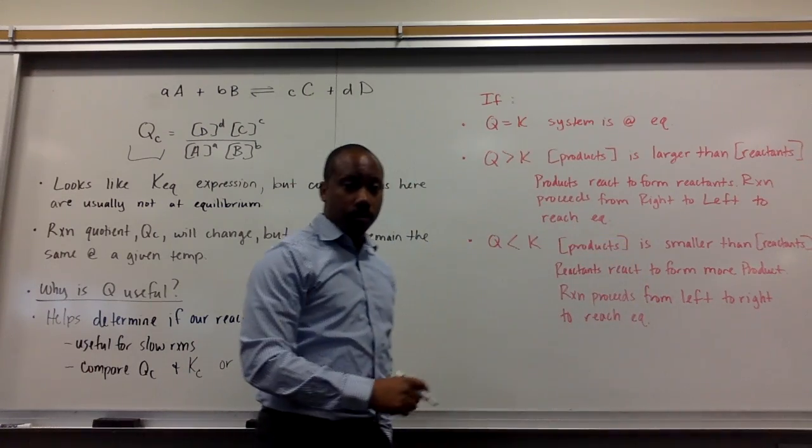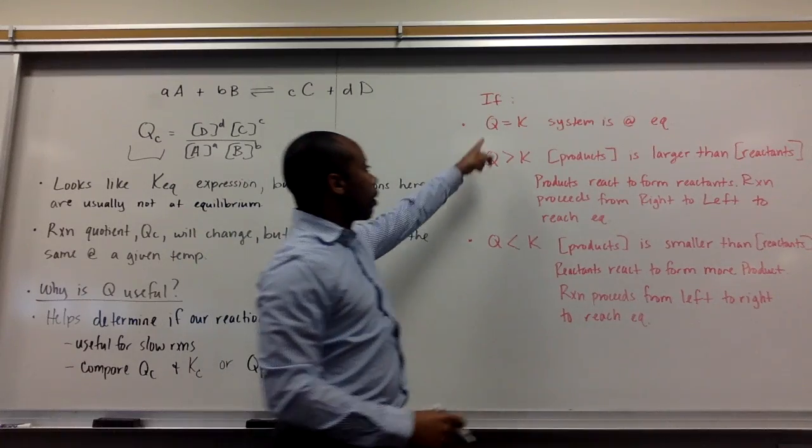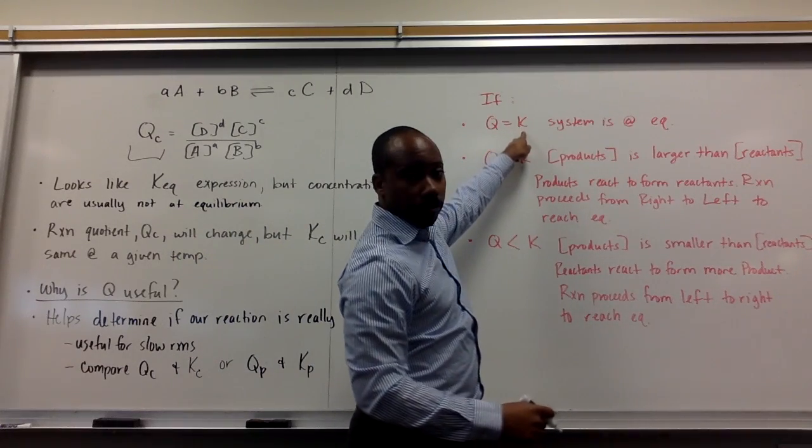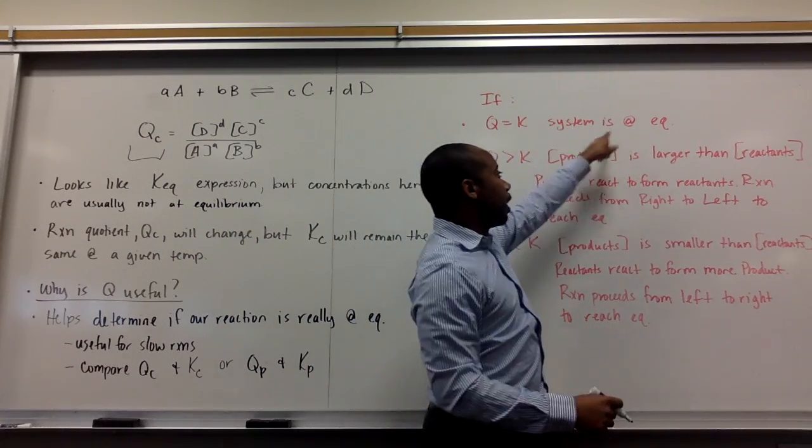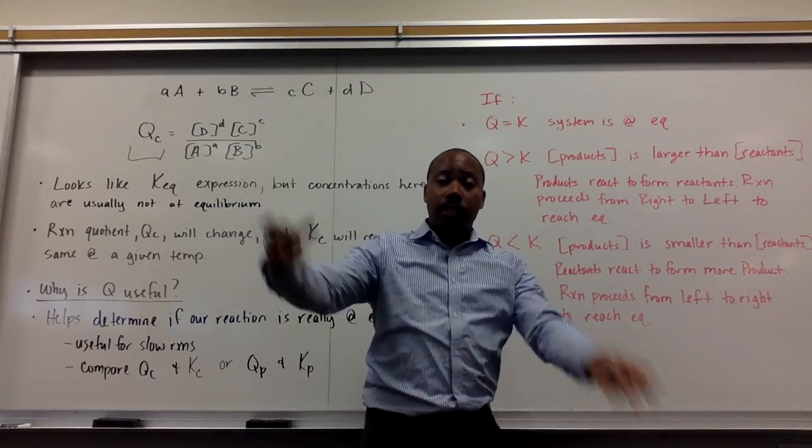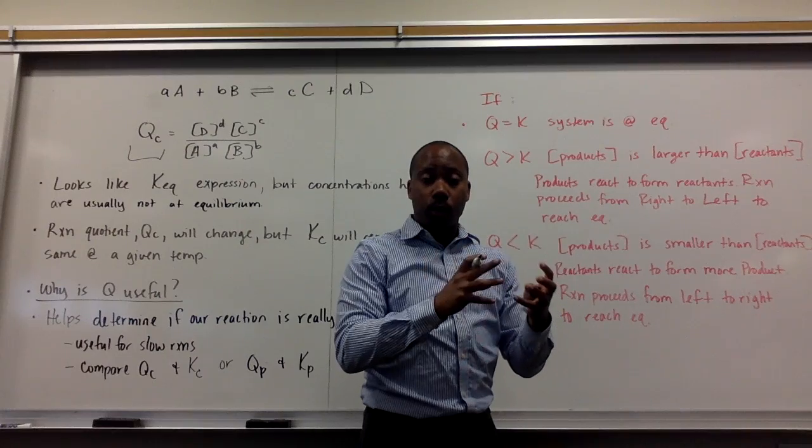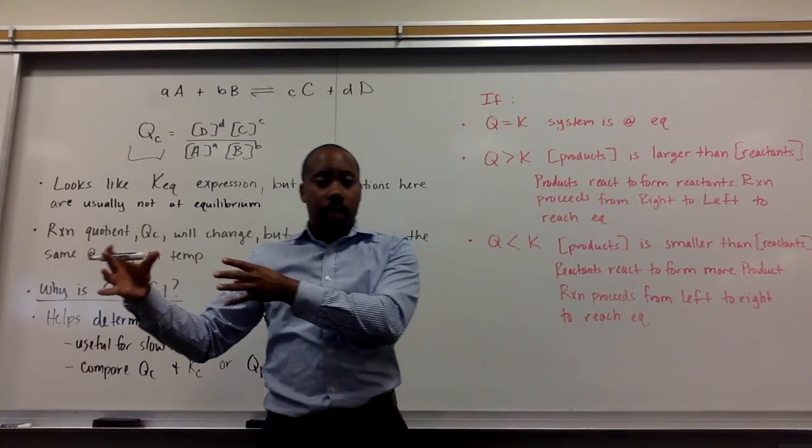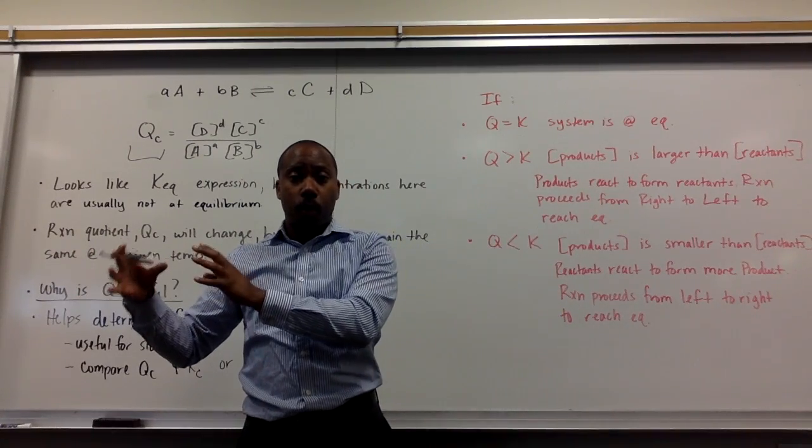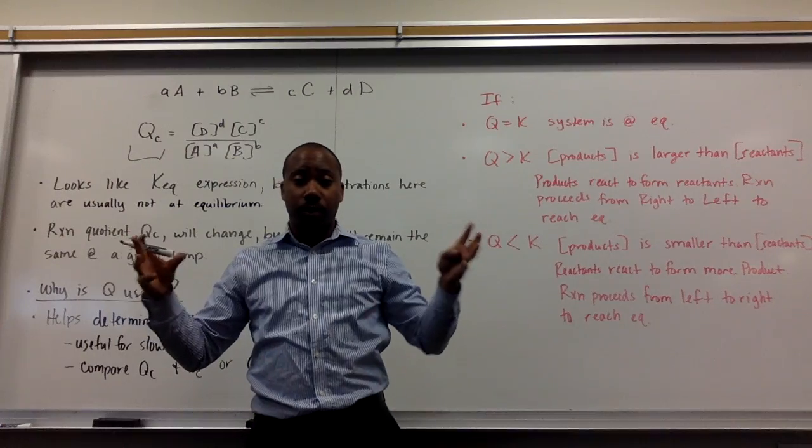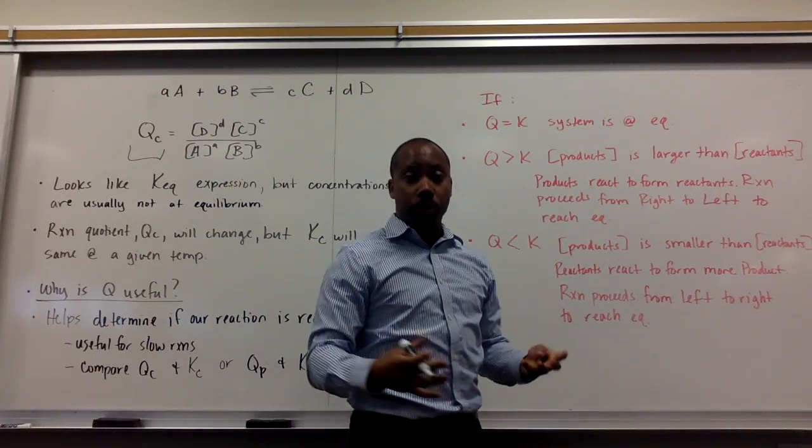Here's a takeaway from this lesson. If Q is equal to K, that means our system is at equilibrium. So, if I had plugged in those numbers from the previous problem, and I got 0.105 for my reaction quotient, and my K sub C value was 0.105, that means the reaction was already at equilibrium when I measured those concentrations.